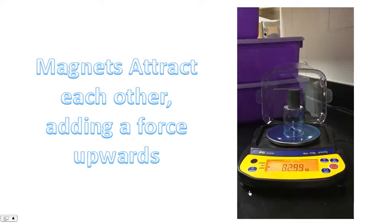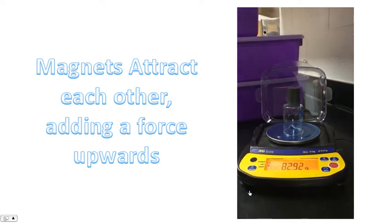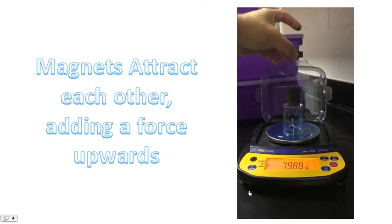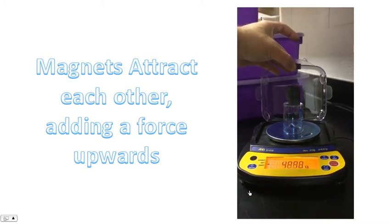And if we simply flip the magnet, now, instead of the magnets repelling each other, they'll attract each other. And now we'll have a force pointing upwards. Let's see what happens. These magnets are attracting each other. And notice the mass gets lighter. This is exactly the same as if I was to lift the magnets.